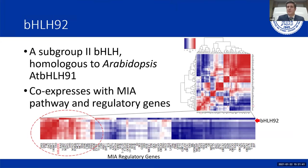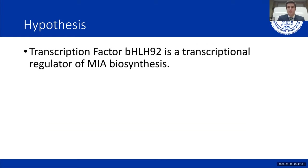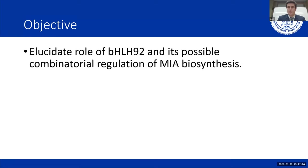BHLH92 is in subgroup two and is homologous to Arabidopsis BHLH91. We ran a co-expression analysis to see if BHLH92 was co-expressed with MIA pathway and regulatory genes, and as shown in red, there is indeed significant co-expression between BHLH92 and MIA biosynthetic genes. Therefore, we hypothesize that BHLH92 is a transcription regulator of MIA biosynthesis, and we seek to elucidate its role and possible combinatorial regulation.